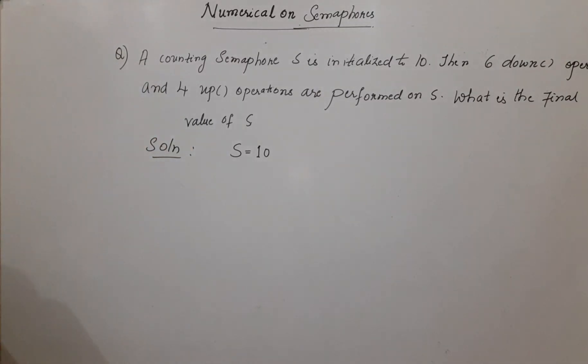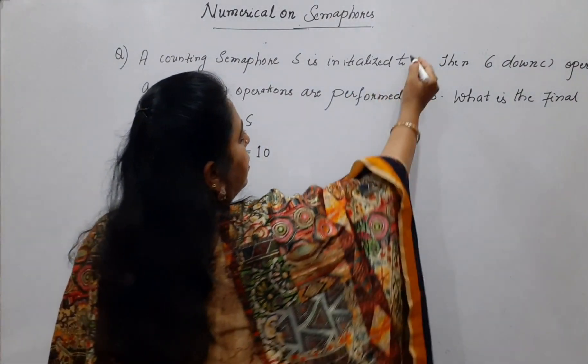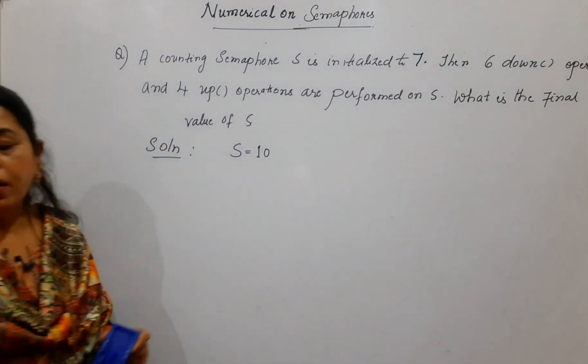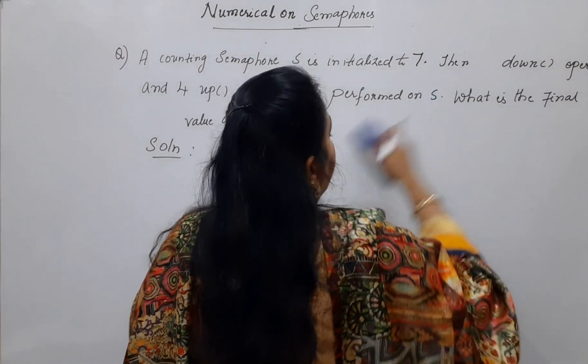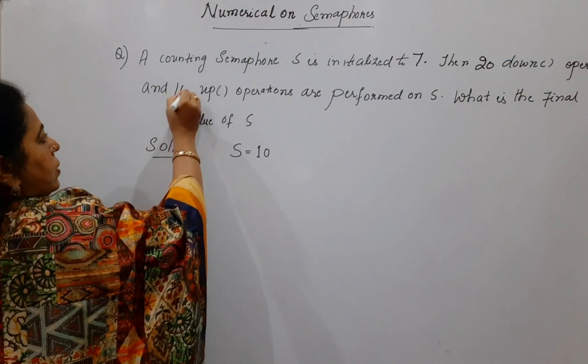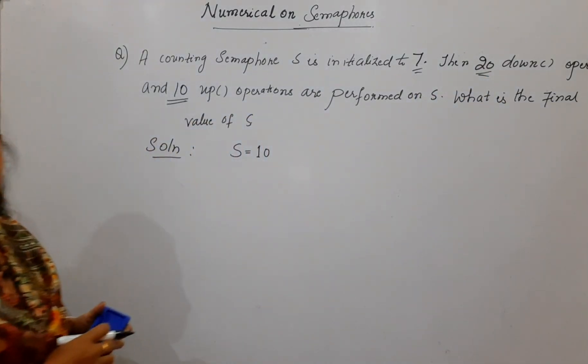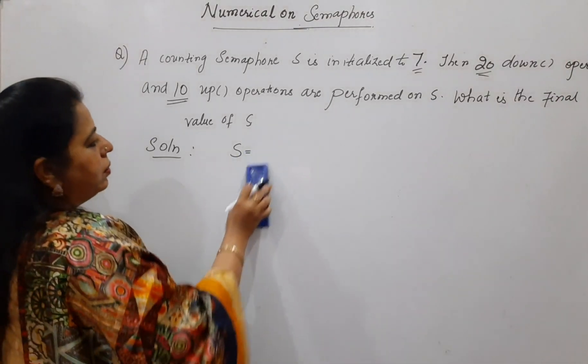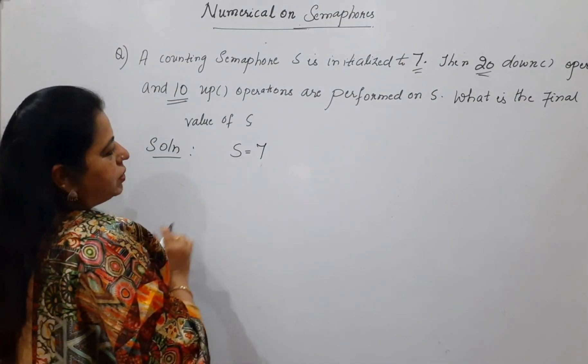In this next example you can take the existing semaphore value, that is counting semaphore S is initialized to 7. Let me write here initialized to 7. Then 20 down operations are carried out and 10 up operations are carried out on the semaphore. Here it is 10, 20 and the existing value of the semaphore is 7. So, very simple. You can use the shortcut method.